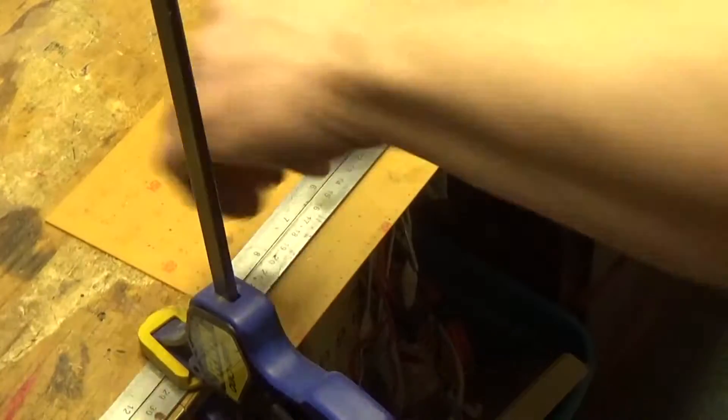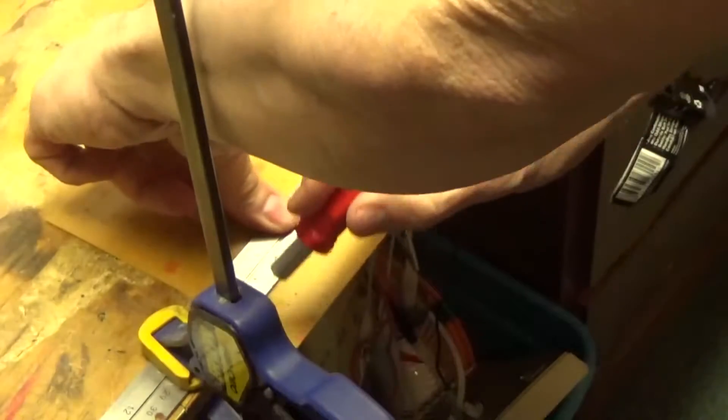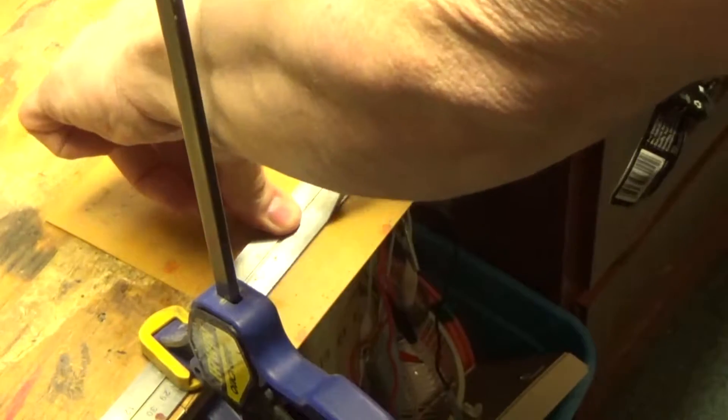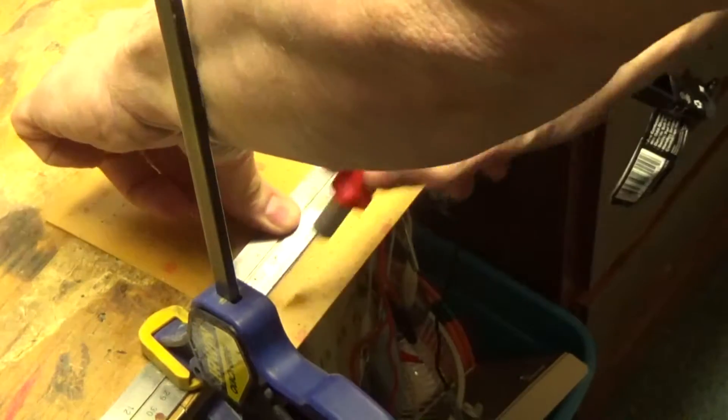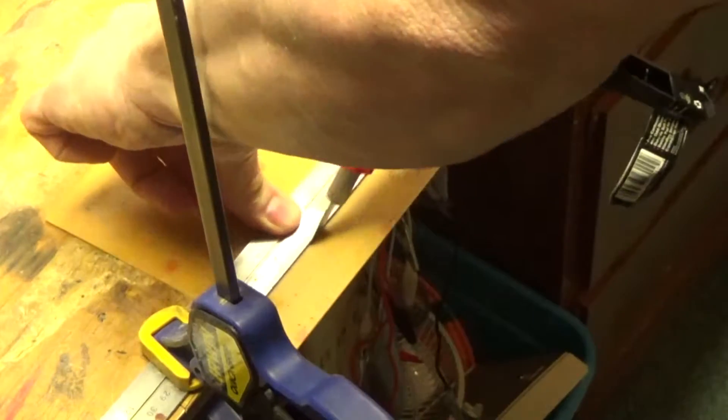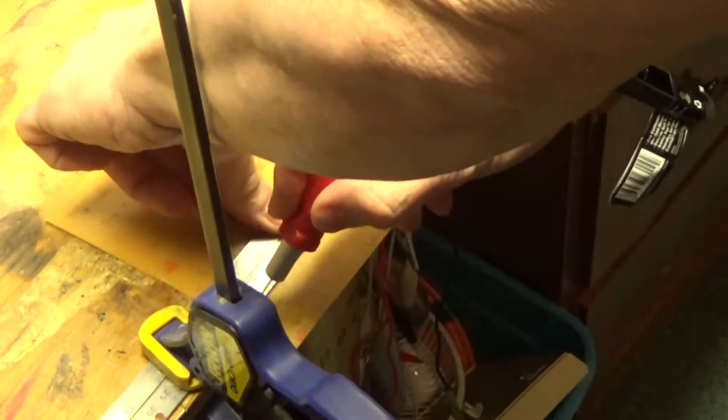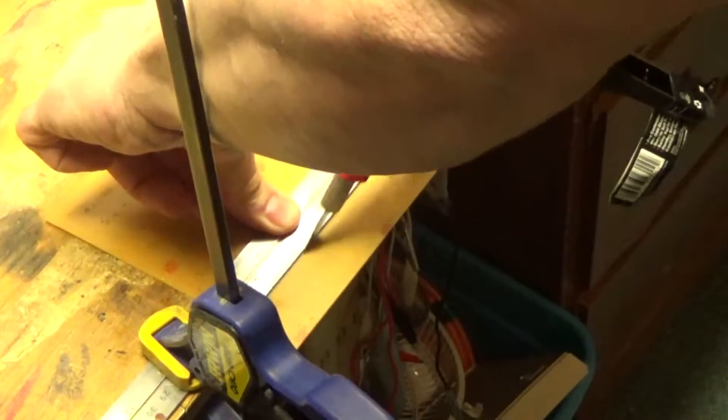Now I have a ruler here. Obviously I drew a straight line. So I scored the copper side first, now I'm scoring the backside. I always hold this up to a light so I can see the score mark from the backside and draw a line.